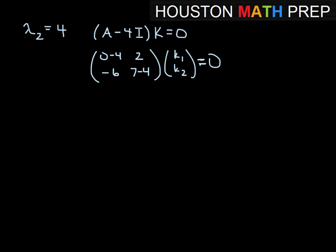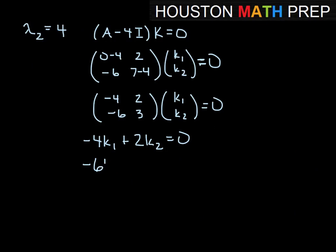So I'll just go ahead and simplify here. That would give us -4, 2, -6, 3 times our K vector equal to 0. And then when we do the multiplication, the first row will give us -4K₁ plus 2K₂ equals 0, and the second row will give us -6K₁ plus 3K₂ equals 0.